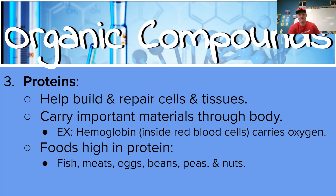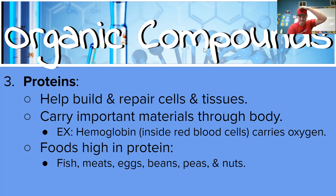Proteins help and repair cells and tissues. Proteins are really cool — they carry important materials through your body. An example of that would be hemoglobin, which is inside your red blood cells and carries oxygen through your blood. Very important. Foods that are high in protein include fish, most meats — beef, chicken, pork, lamb — eggs, beans, peas, and nuts. Go ahead and pause.